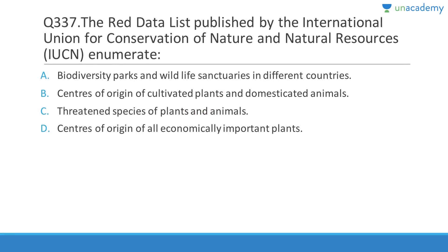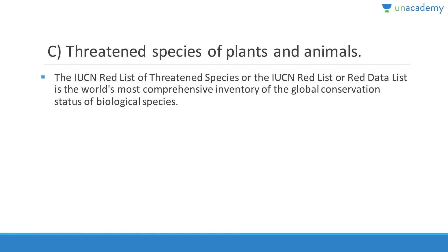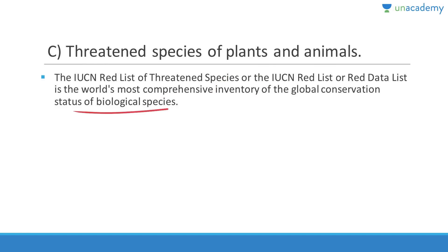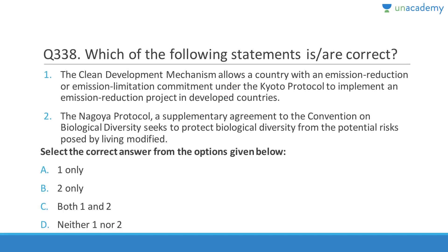Question 337: The Red Data List published by IUCN enumerates threatened species of plants and animals. Answer is C. The IUCN Red List of Threatened Species is the world's most comprehensive inventory of the global conservation status of biological species.